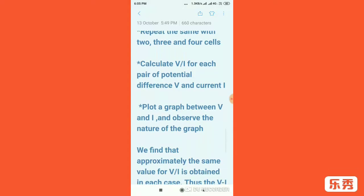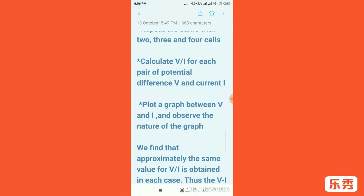Now plot a graph between V and I and observe the nature of the graph. Now with the values we got for V and I, you plot a graph and join the points from the origin. You will see that it passes through the origin.